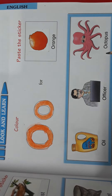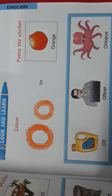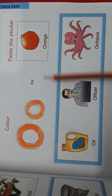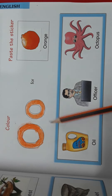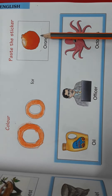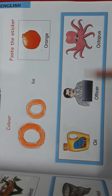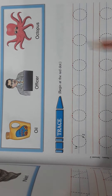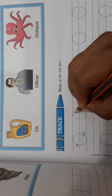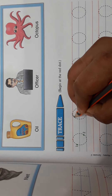Now we'll see all the words that come from O: O for orange, oil, officer, octopus. Now we'll see how to write O.